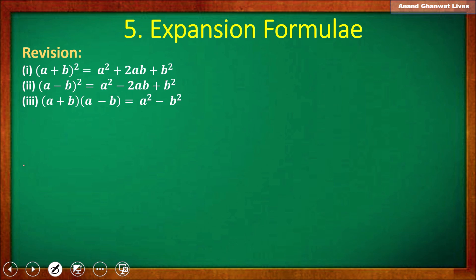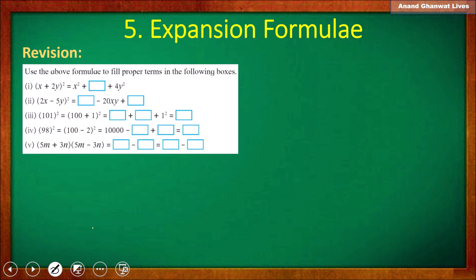Now let us solve some examples based on these three formulas. First example: (x + 2y)². Observe the two terms given here — the addition of two terms is present, so we need to identify which formula is required.